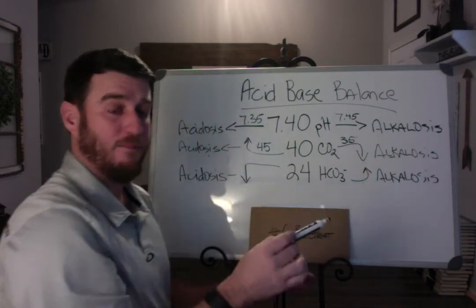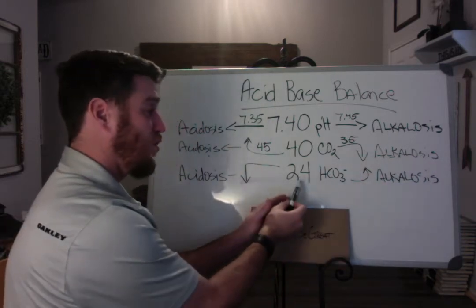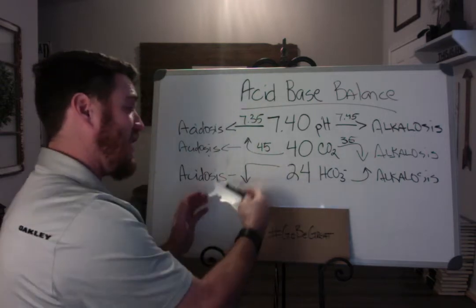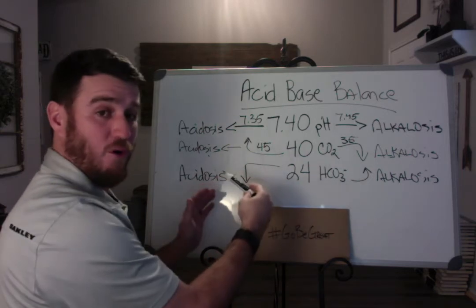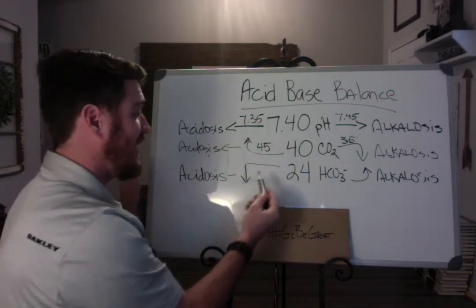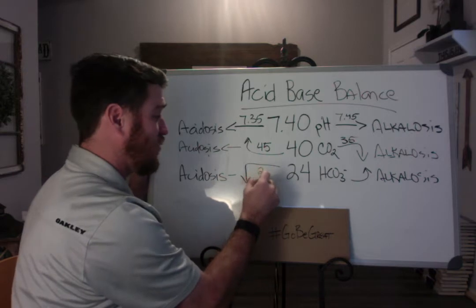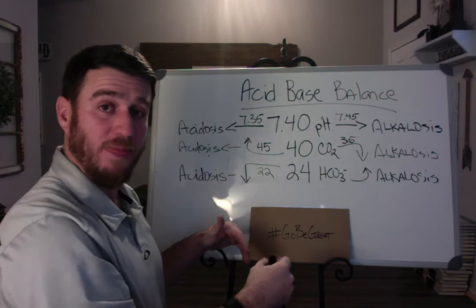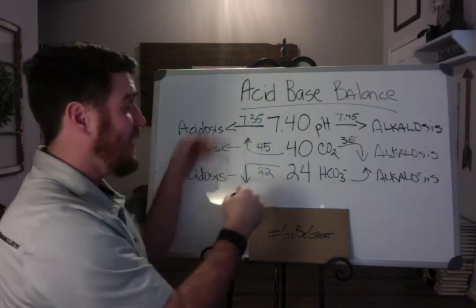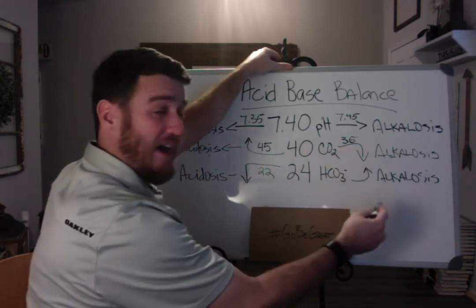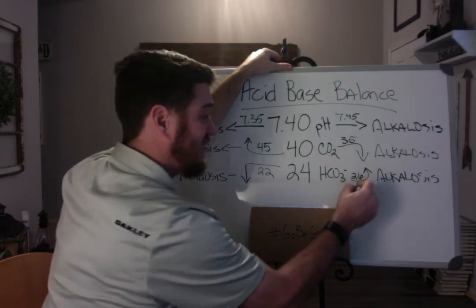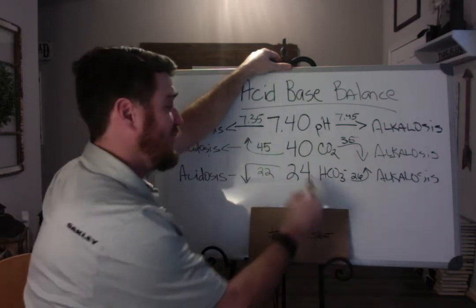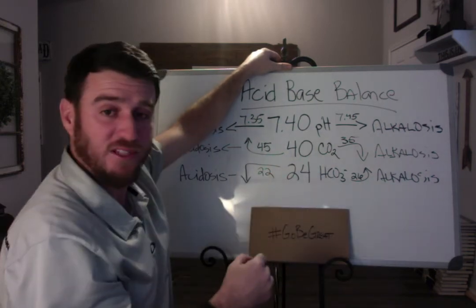Bicarb normal is 24, but the normal range is 22 to 26. As bicarb falls less than 22, you'll become acidotic. If it becomes greater than 26, you find yourself in a state of alkalosis — and remember, that's assuming your CO2 stays at 40.